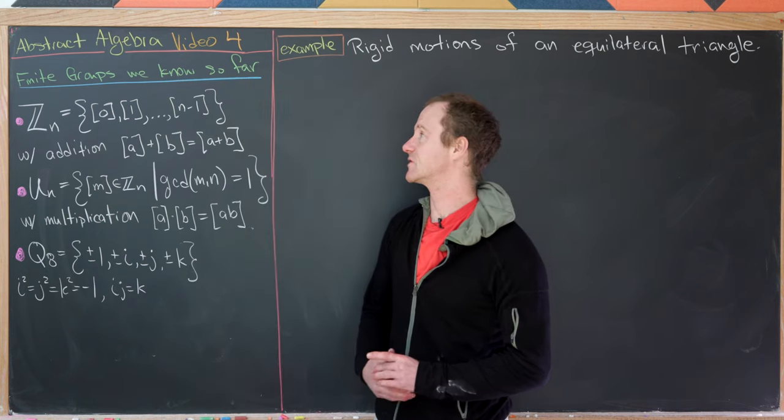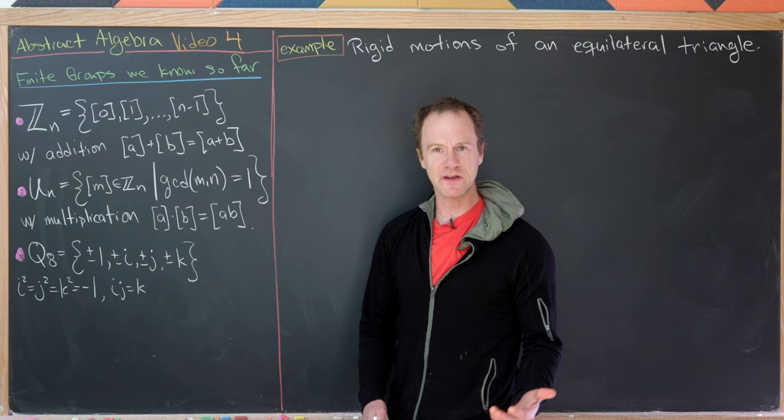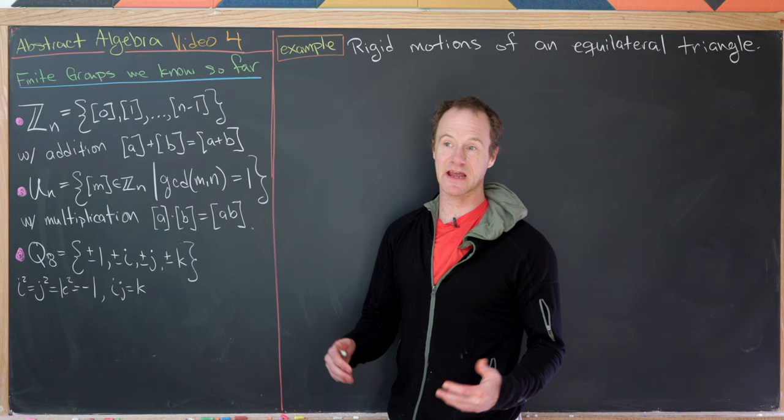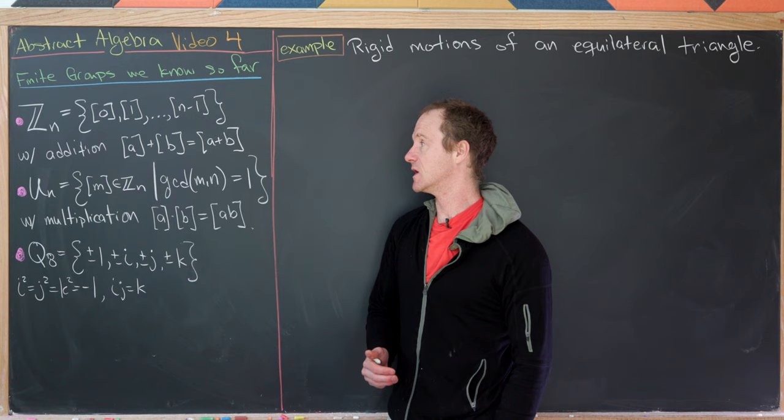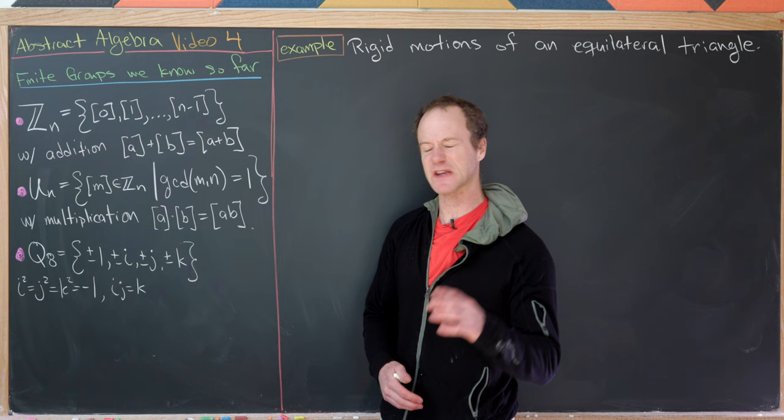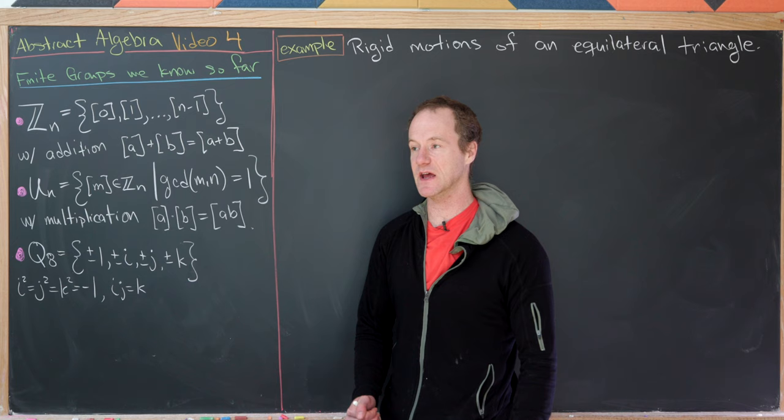This is the fourth video in a series devoted to abstract algebra. In the previous video we looked at the definition of a group, some examples of finite and infinite groups, and a couple of families of finite groups. I'd like to recall those before we look at our main goal for today, which is symmetry groups of polygons.